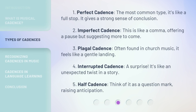1. Perfect Cadence: The most common type, it's like a full stop — it gives a strong sense of conclusion. 2. Imperfect Cadence: This is like a comma, offering a pause but suggesting more to come.